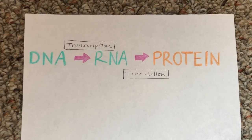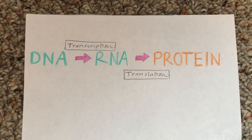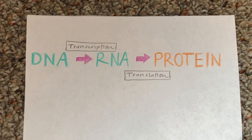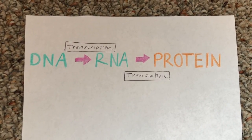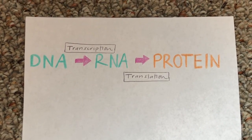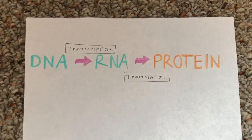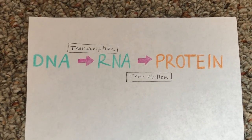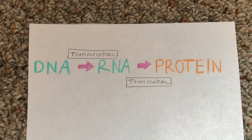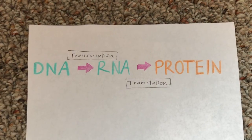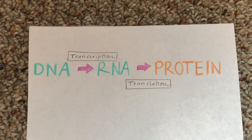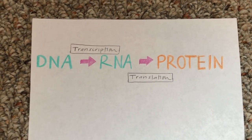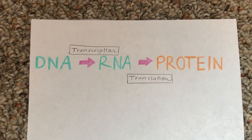Francis Crick proposed that specialized RNA molecules, known as tRNA, act as an adapter in the binding of amino acids to the corresponding mRNA sequence. Referring to the central dogma, DNA and RNA are both made of nucleotides, therefore transcription occurs without the need for an adapter.